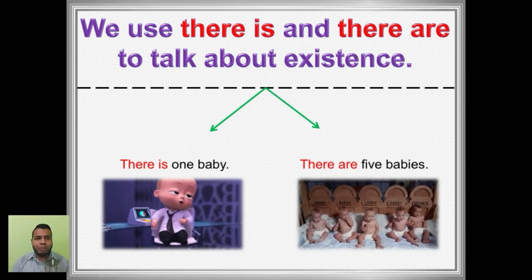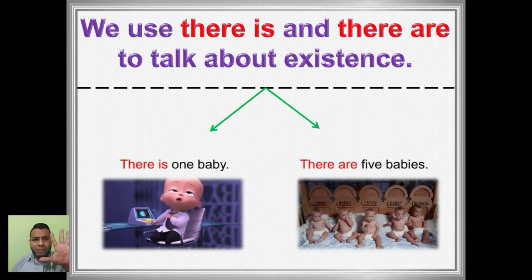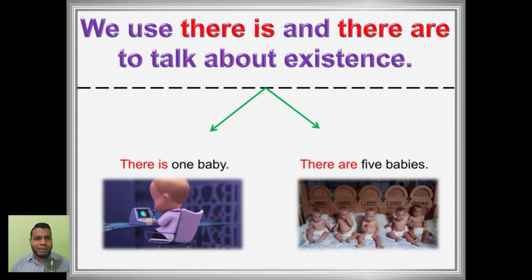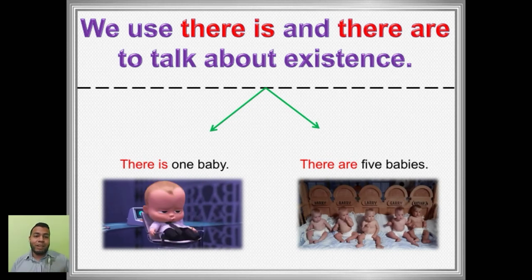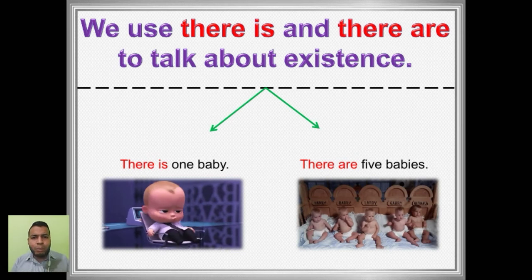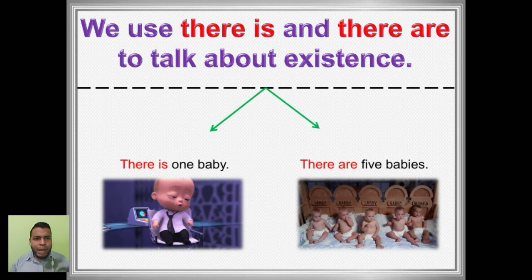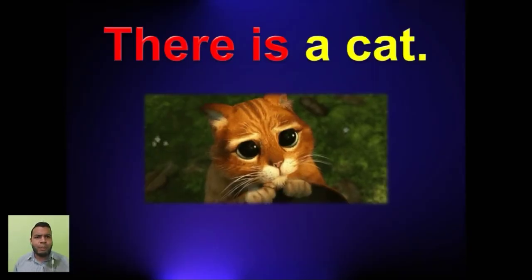On the other hand, we have the word there are. There are five babies. Hay cinco bebés. Entonces, ¿qué quiere decir esto? Que el there are, por otra parte, lo voy a utilizar para plural. ¿Y qué quiere decir plural? Dos o más. There is a baby. There are five babies. Let's see some other examples.